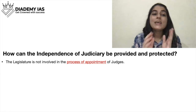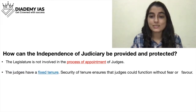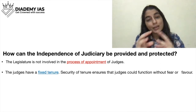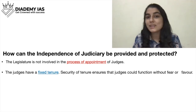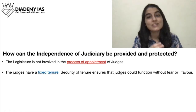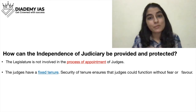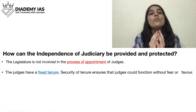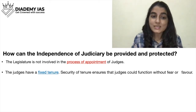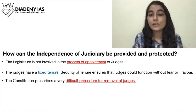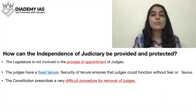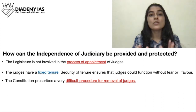The second provision is that judges have a fixed tenure. If the tenure were connected to the legislature, judges would fear giving decisions against the government, thinking they might lose their position. But since judges' tenure is fixed, they can give decisions against anyone without any effect on their tenure. Security of tenure ensures that judges can function without fear or favor. Additionally, the constitution prescribes a very difficult procedure for the removal of judges, which also enhances the independence of judiciary and allows judges to work effectively without any fear.